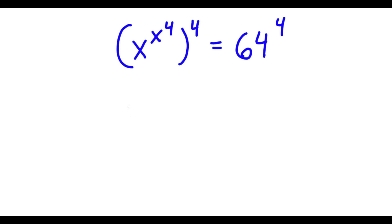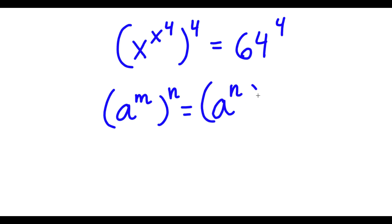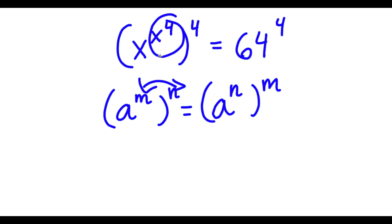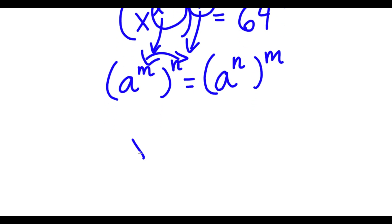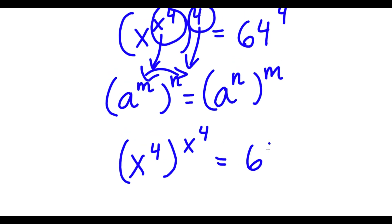If I have something in the form a to the power of m to the power of n, this is the same thing as a to the power of n to the power of m — I can switch the places of m and n. In this case, we can think of x to the power of 4 as m and 4 as n. So switching these gives x to the power of 4 to the power of x to the power of 4, equal to 64 to the power of 4.